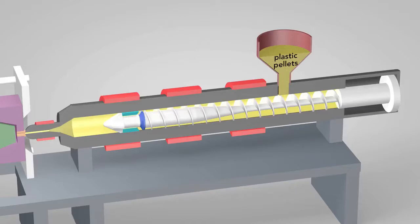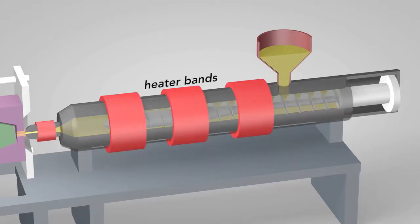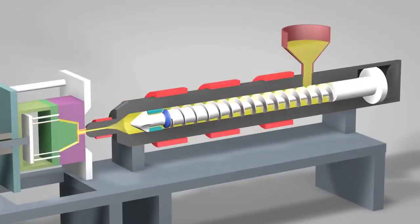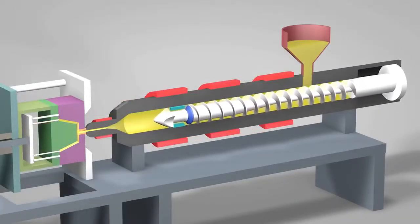Plastic pellets in the hopper feed into the barrel of the injection unit. Inside the barrel, a screw transports the pellets forward. Heater bands wrapped around the barrel warm up the plastic pellets. As the pellets are moved forward by the screw, they gradually melt and are entirely molten by the time they reach the front of the barrel.